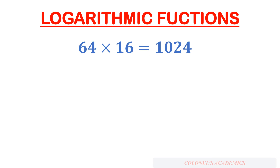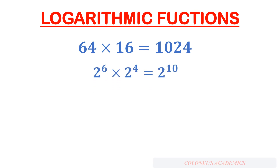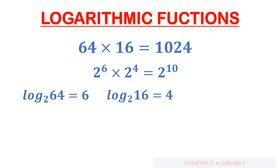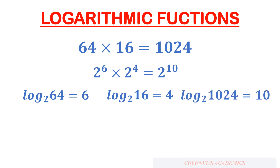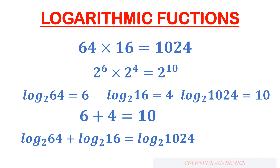Now let us consider these two numbers: 64 times 16 is equal to 1024. Let us convert this into exponential form: 2 to the power of 6 times 2 to the power of 4 will be equal to 2 to the power of 10. So log of 64 to the base 2 will be equal to 6, log of 16 to the base 2 will be equal to 4, and log of 1024 to the base 2 will be equal to 10. The relationship between these logs is simply 6 plus 4 equals 10, just a simple addition of these powers. That means log of 64 to the base 2 plus log of 16 to the base 2 will be equal to log of 1024 to the base 2.